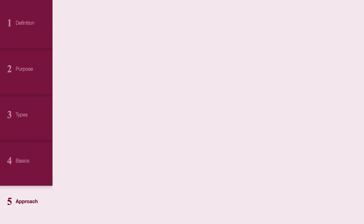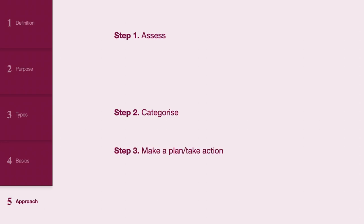A systematic approach to interpreting an intrapartum CTG can be broken down into three key steps. First, assess, where most of the mnemonic Dr. C. Bravardo is used. Second, categorize, determining if the trace is normal, suspicious, or pathological — representing the O in Bravardo. Third, make a plan, deciding on the appropriate management based on the findings.